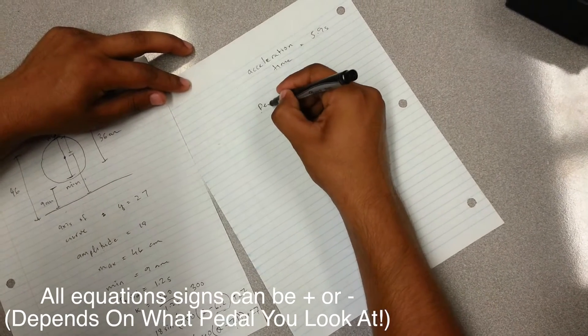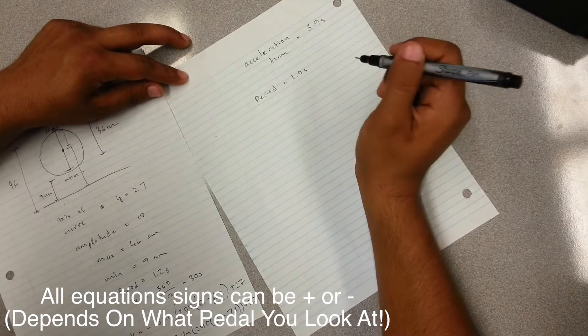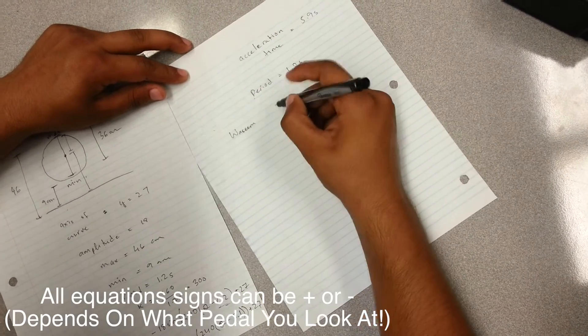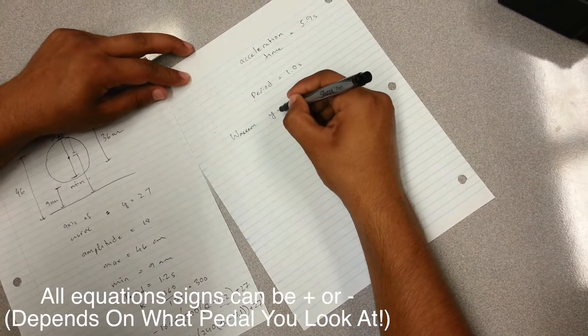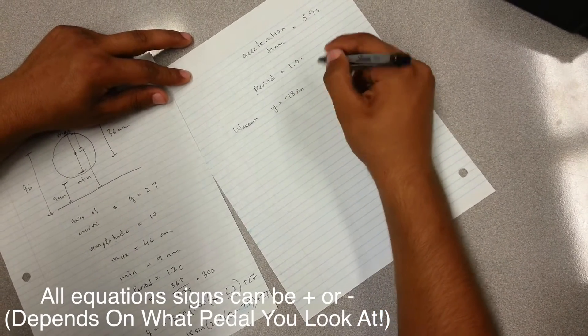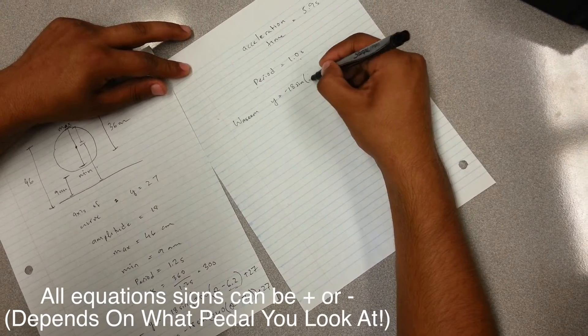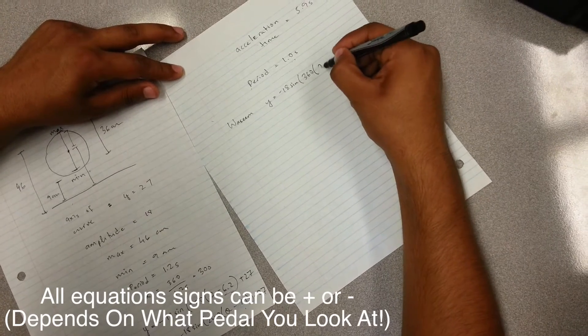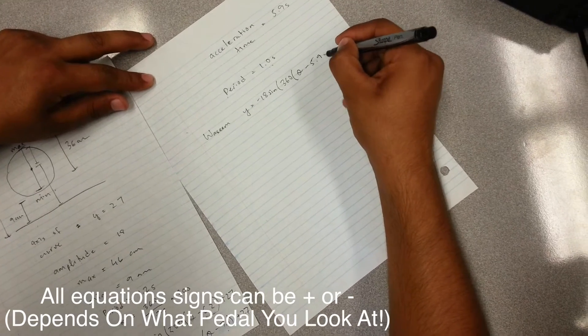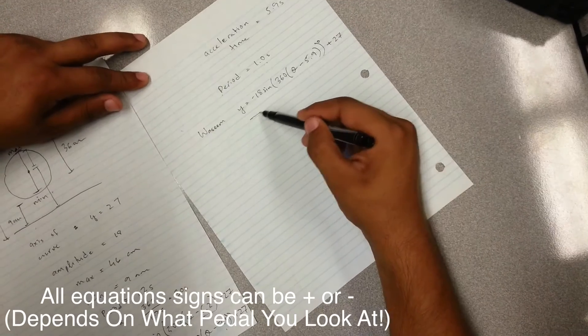And my period, if I have to beat him, my period should be like about 1 second per cycle. So my aim would be, if my future equation would be negative 18 sine, 360 divided by 1 would be 360. So K would be 360. Theta minus my acceleration time is 5.9, so it's going to be 5.9. And the axis of curve would also stay the same. This is my goal.